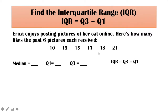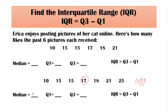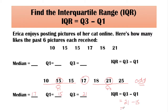How about if the given data set has an odd number of values? We still need to find the median, Q1, and Q3 to find the IQR. Since this is odd, the middlemost number is 17, and that is our median. The lower median is 15, and we call that Q1. The upper median is 21, and we call that Q3. Q1 is 15 and Q3 is 21, so the IQR is 21 minus 15, which is equal to 6.